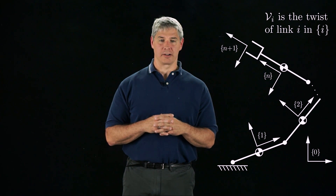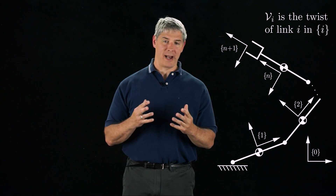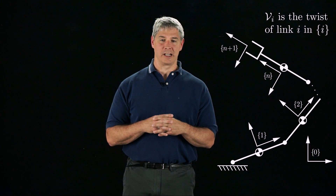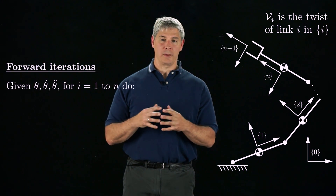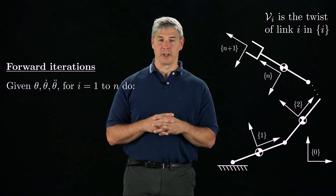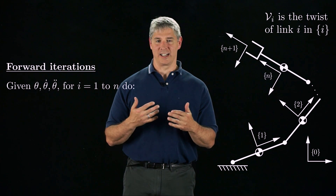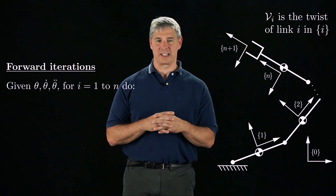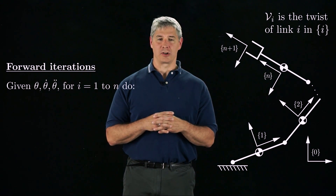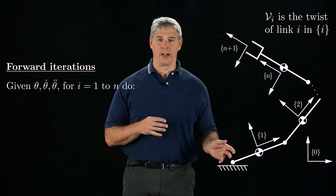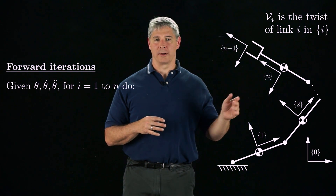With these definitions, I'll quickly summarize the algorithm — we'll come back to the details later. First, we perform the forward iterations, which calculate the configuration, twist, and acceleration of each link, starting from link 1 and moving outward.